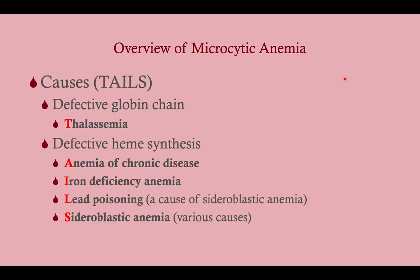Microcytic anemia — the causes can be remembered by the mnemonic TAILS, T-A-I-L-S. You can also remember it by the fact that it is either due to a defective globin chain, which is the thalassemias, or defective heme synthesis. Remember, your other cause of defective globin chains is sickle cell disease, but that is a normocytic anemia. Defective heme synthesis includes anemia of chronic disease, iron deficiency anemia, lead poisoning, and sideroblastic anemia.